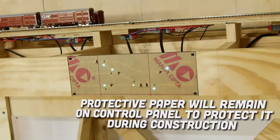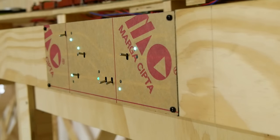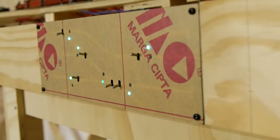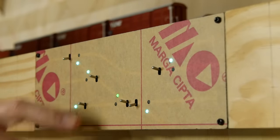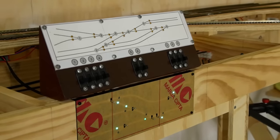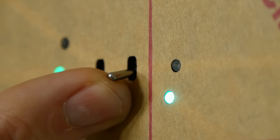A clear and easy to understand control panel will make operating the layout much more enjoyable, especially for newcomers who aren't familiar with how your layout works. This panel is an iteration of the control panel design I did back in 2014. However with this design each toggle switch is centered on the track diagram making it a bit easier to follow.